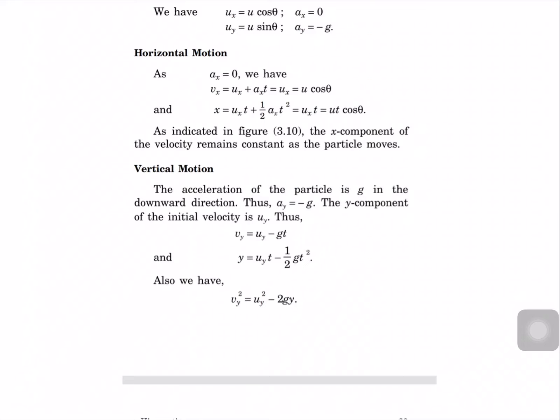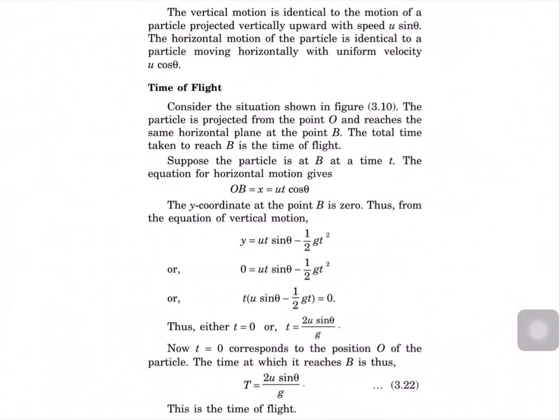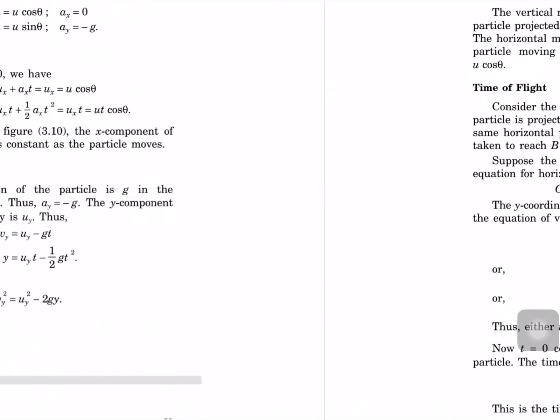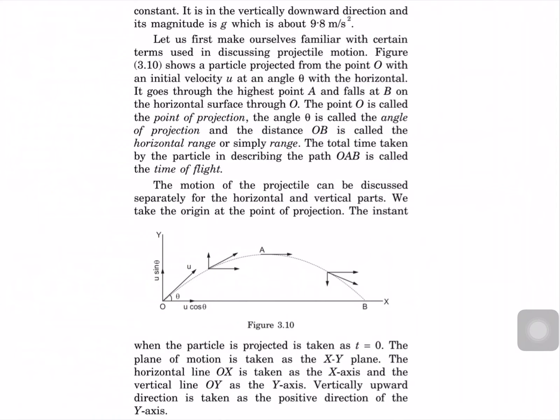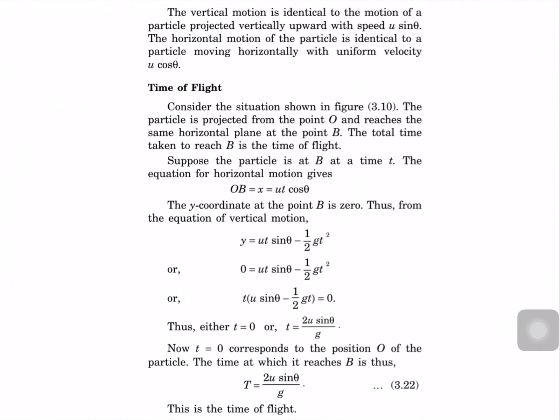So vy equal to U sin theta minus g·t, and y equal to U sin theta times t minus half g t squared. We also have v² = u² minus 2g·y. The vertical motion is identical to that of a particle projected vertically upward with velocity U sin theta, and the horizontal motion is identical to uniform motion with velocity U cos theta.